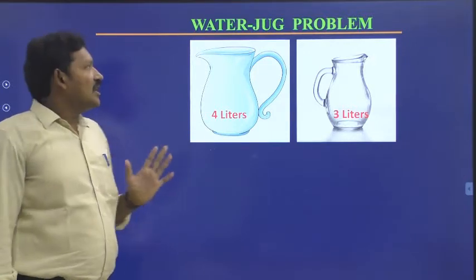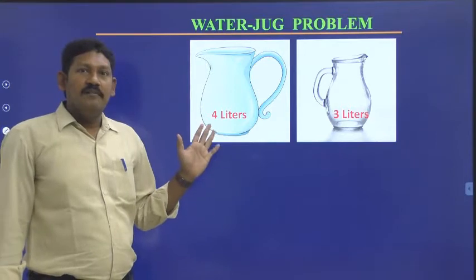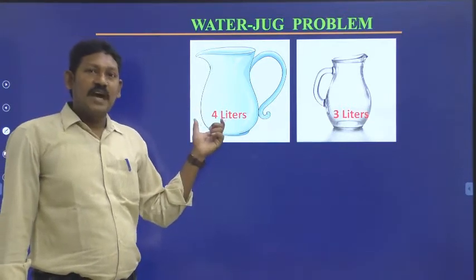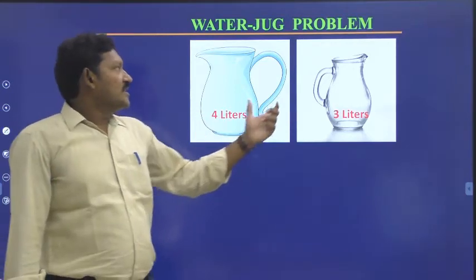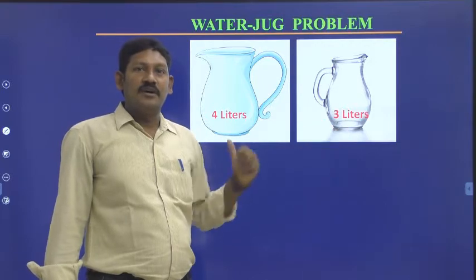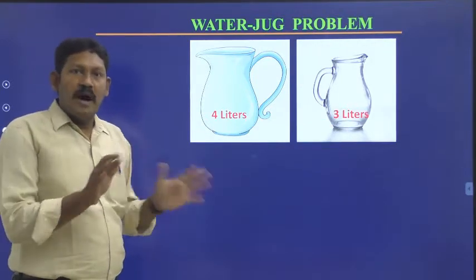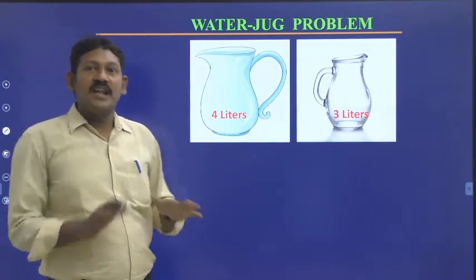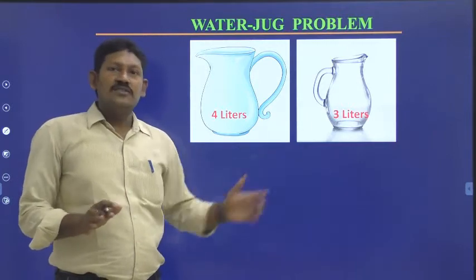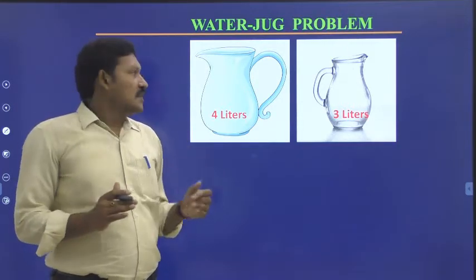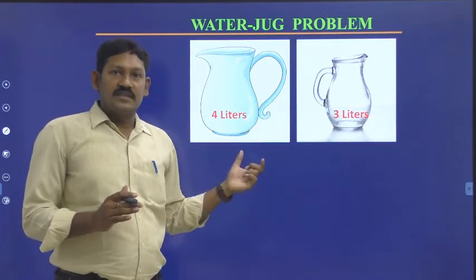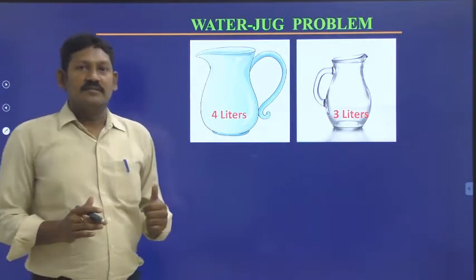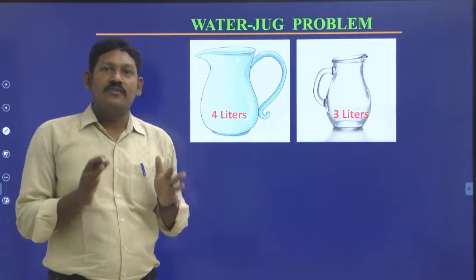So here we have two jugs available. The first jug is capable of storing four liters of water, and the second jug is capable of storing three liters of water. Initially there are no markings on either jug. By using these two jugs, we have to maintain exactly two liters of water in the four liter jug — that is the constraint, that is the problem we have to solve.